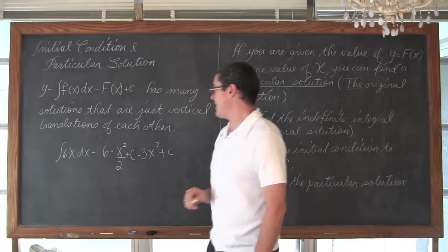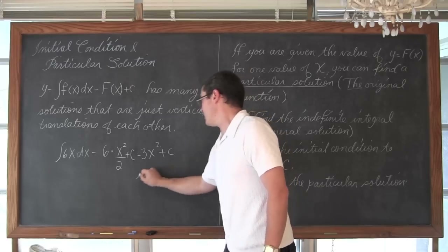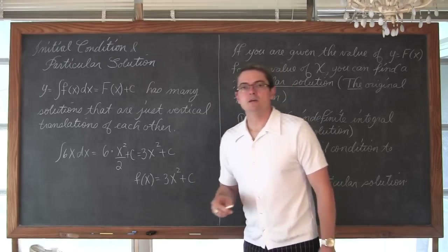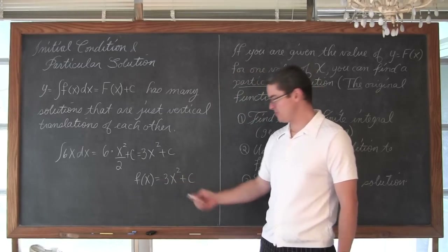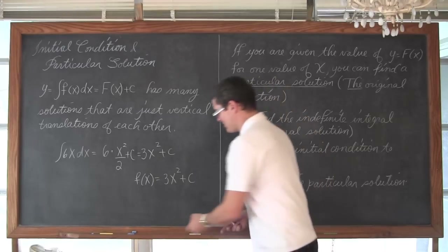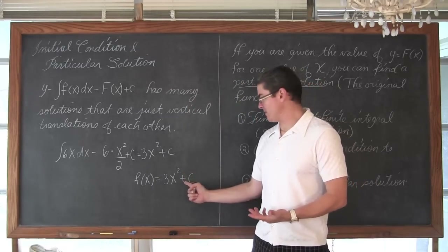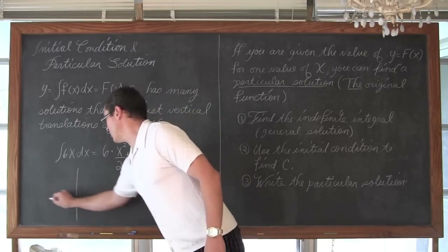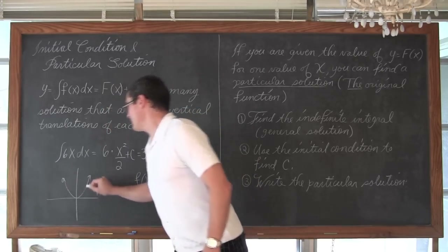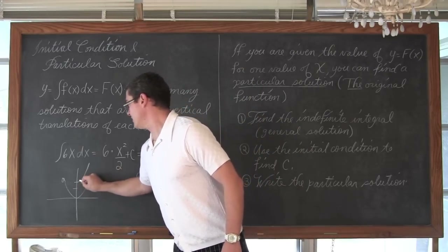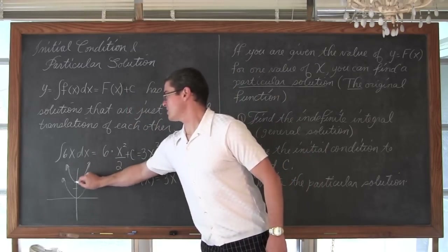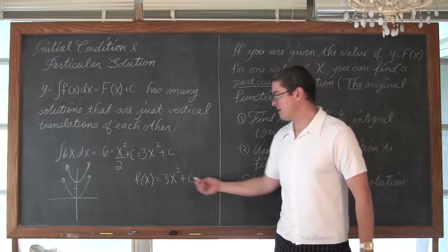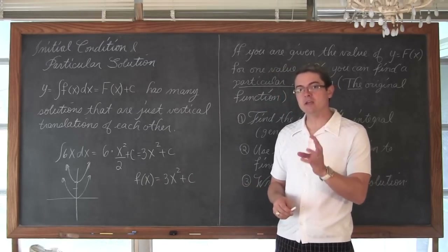Which is equal to 3x squared plus C. So we have f equal to 3x squared plus C. I don't know if this parabola passes through the origin, or maybe this parabola had a vertical shift of 2 and thus passes through the point (0, 2), along with many other points. I have a plus C, I have a constant at the end. So while I know the family of antiderivatives, I don't know the particular solution.